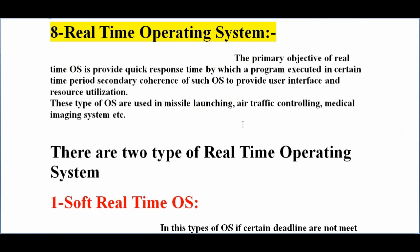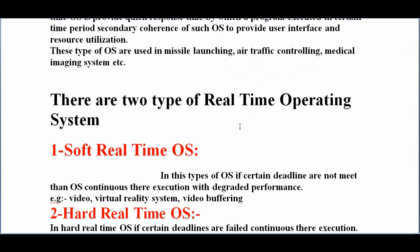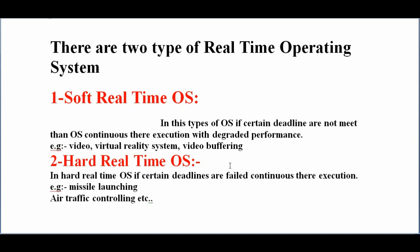There are two types of real time operating system: soft real time and hard real time. In soft real time operating system, if certain deadlines are not met, the operating system continues execution with degraded performance — like video buffering or virtual reality systems. For example, if your internet connection is slow, video buffering will be at low resolution. In hard real time operating system, if certain deadlines are failed, it still continues execution — used in missile launching and air traffic controlling.